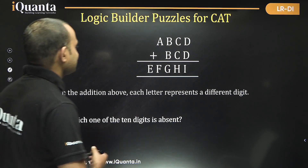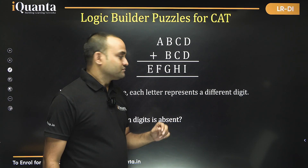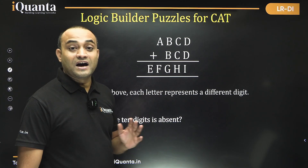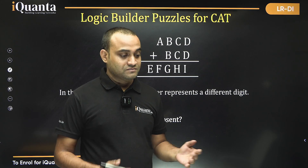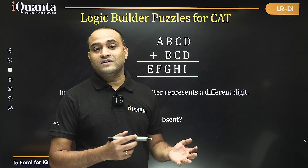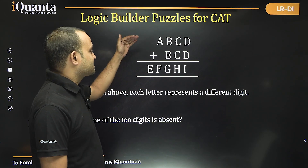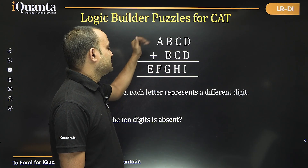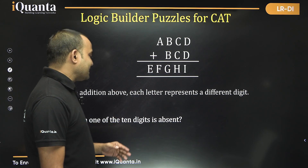This question says that A, B, C, D, E, F, G, H, I — all nine — are distinct single-digit numbers that can take values from 0 to 9, such that a given summation holds. We need to find which one of the 10 digits is absent.